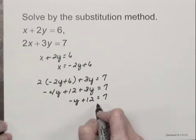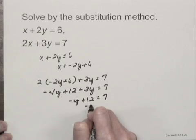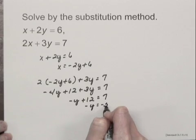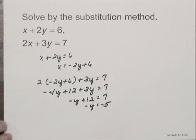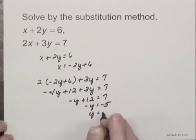I can subtract 12 on both sides of the equation. I get the opposite of y is equal to negative 5. If I multiply or divide both sides by negative 1, I have y equals 5.